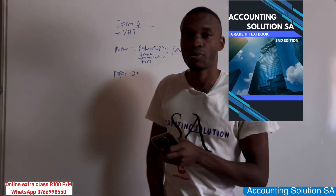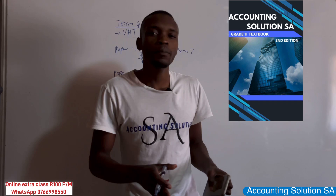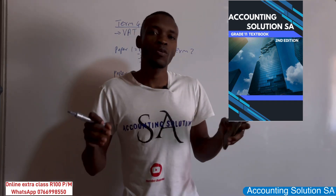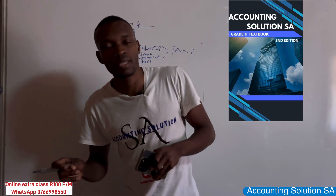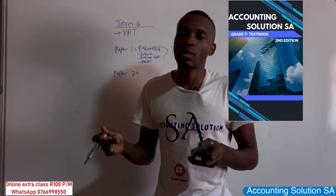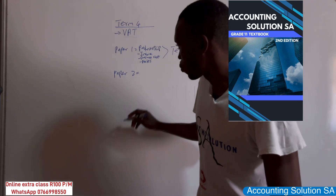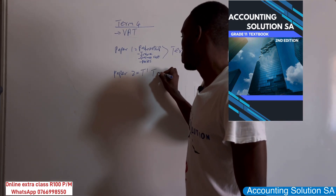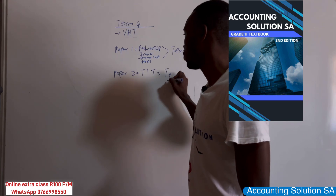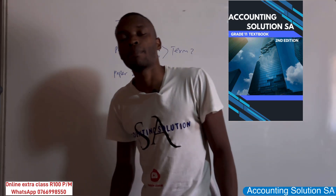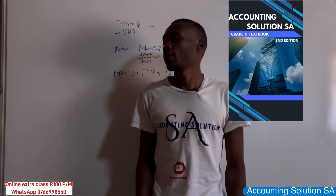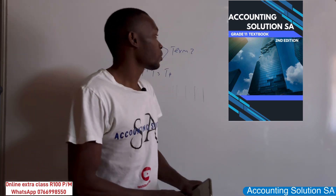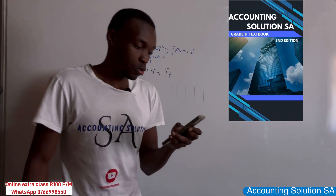Term 1 — reconciliation and fixed assets — is Paper 2. Term 3 — manufacturing, inventory, and cost accounting — is also Paper 2. Term 4 VAT is also Paper 2. So Term 1, Term 3, and Term 4 content goes into Paper 2, while Term 2 content goes into Paper 1.